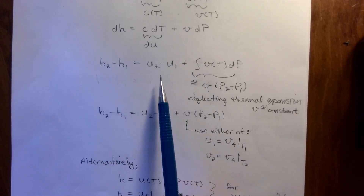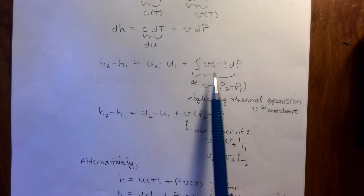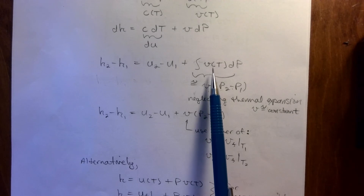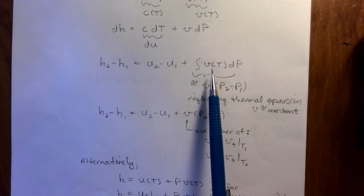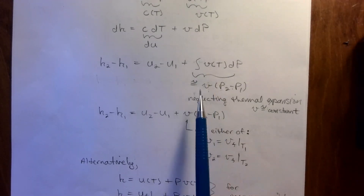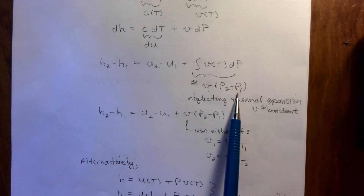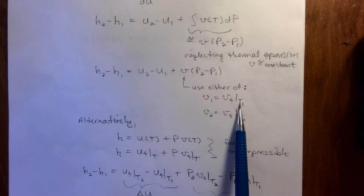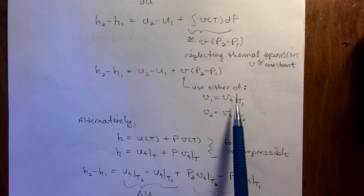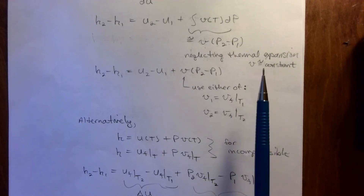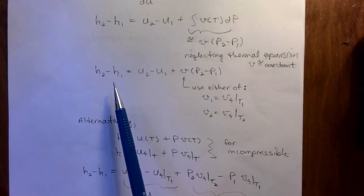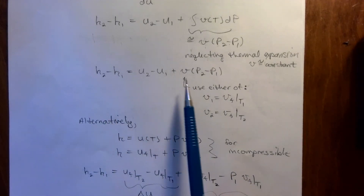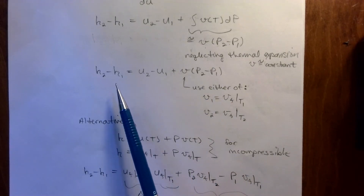Integrating: H2 minus H1 equals (U2 minus U1) plus the integral of V·dP. If we assume V is not changing — neglecting the small thermal expansion — we can take V outside the integral, giving approximately V times (P2 minus P1). For V you can use either VF at T1 or VF at T2, since we're assuming they are negligibly different. This was applicable, for example, in problem 4-70 where you're assuming constant density or constant specific volume to evaluate delta H.